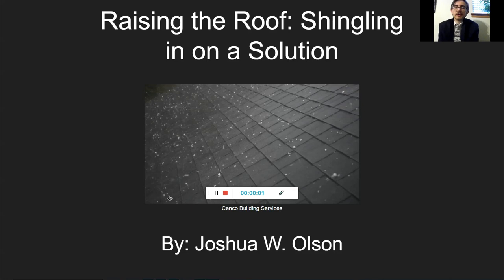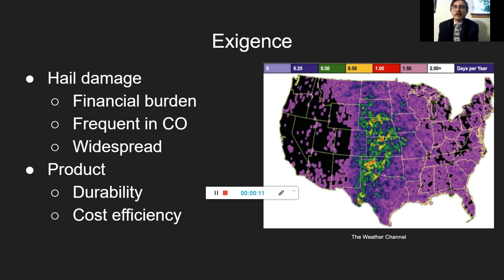Hey everyone, I'm Josh Olson and today I'm going to be presenting my SciTech project. What I want to do is make a new kind of shingle that combats hail damage. We should care because hail damage is such a widespread issue, especially frequent in Colorado, and it's a financial burden for many homeowners. I want to develop a product that's durable and cost-efficient.